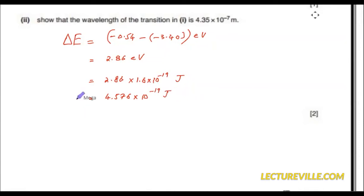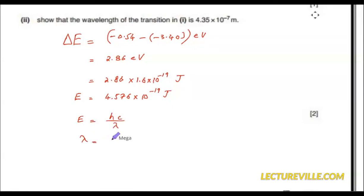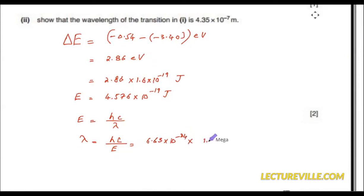Now this is E, and we know E equals hc over lambda. So lambda equals hc over E: that is 6.63×10⁻³⁴ multiplied by 3.0×10⁸, divided by E, which we just calculated as 4.576×10⁻¹⁹.